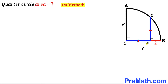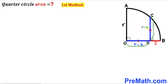We know that segment BD is two, so therefore this remaining segment OD is going to be lowercase r minus two. And if this OD segment is r minus two, then this CD segment is going to be r minus two as well. Now our task is to find the value of radius r.